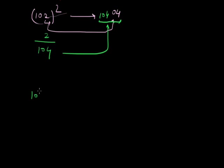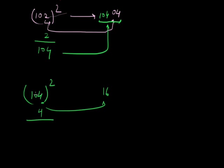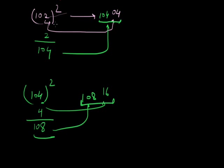Next, 104 squared: 4 squared is 16 (2-digit form). We add 4 to 104 to get 108. So 104 squared is 10816. What about numbers less than 100? For 98 squared: 98 is 2 less than 100, so 2 squared is 04. Then 98 minus 2 is 96. So 98 squared is 9604.